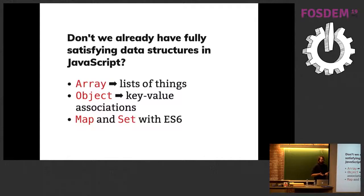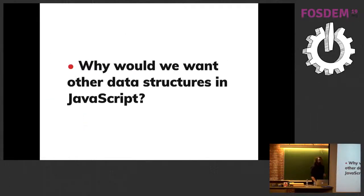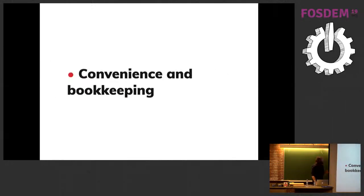Don't we already have data structures in JavaScript? We have arrays, we have objects, and now with ES6 we've got maps and sets. So why bother about custom data structures? Why do we want others? The first point is because it's convenient. Like any other abstraction, having custom data structures is convenient and makes it easy to do heavy bookkeeping.